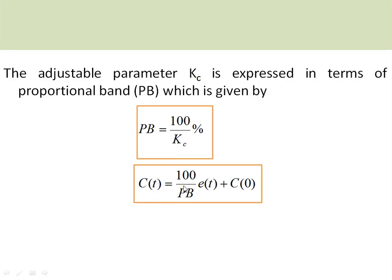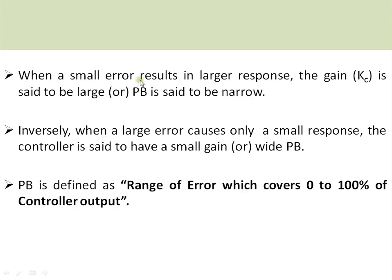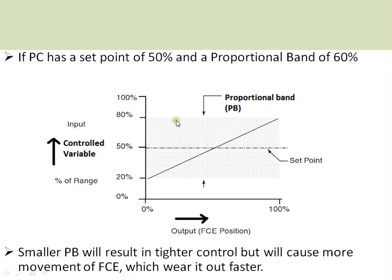The proportional band can be set based on the required response. When the gain is large, a smaller error results in a larger response — this is a narrow proportional band. When the gain is small, a larger error causes only a small response — this is a wide proportional band. The proportional band is defined as the range of error that covers 0 to 100 percent of the controller output.